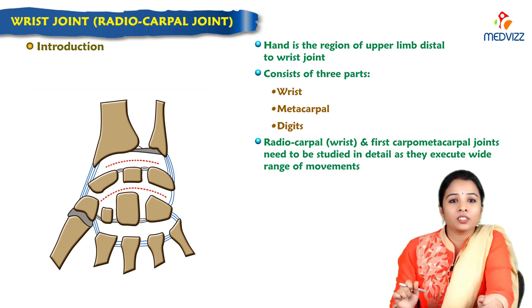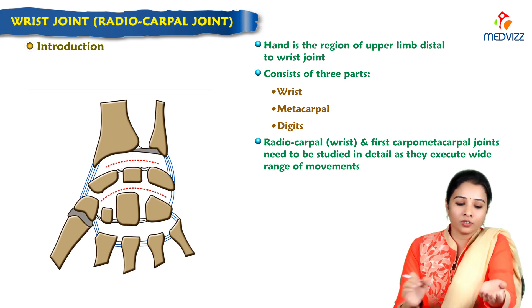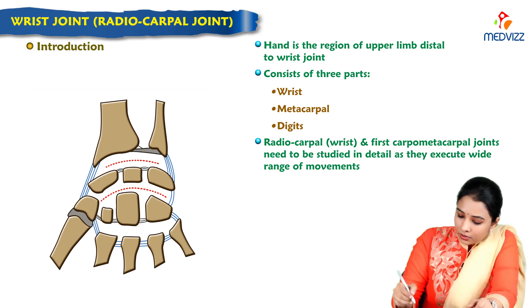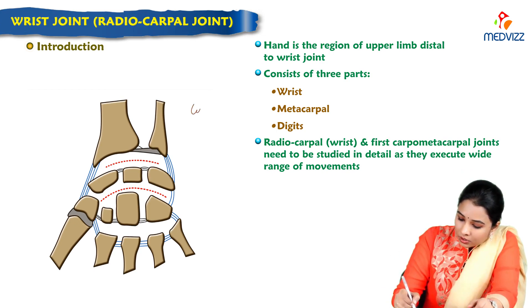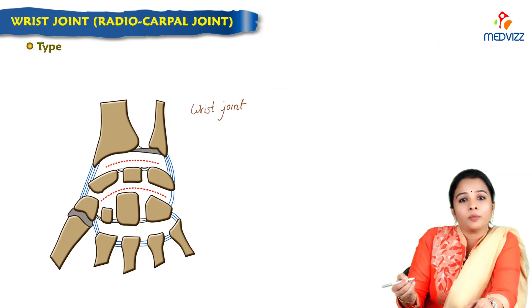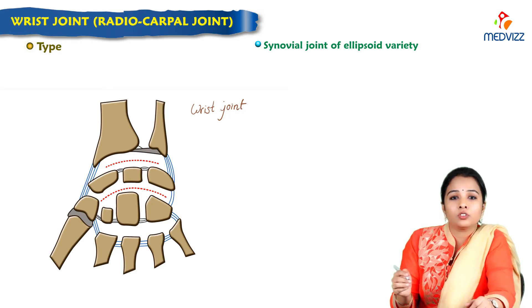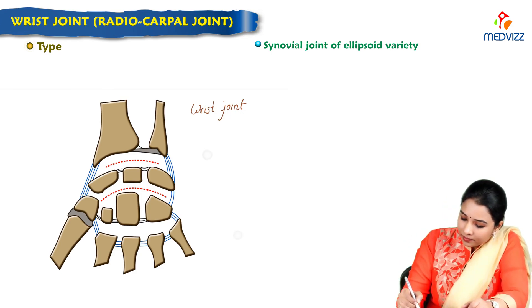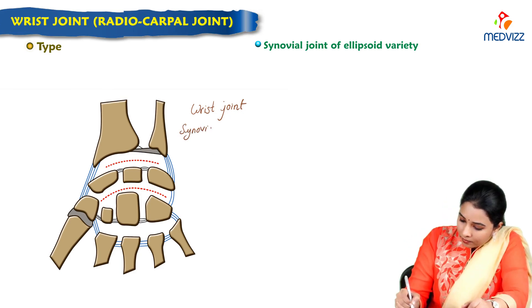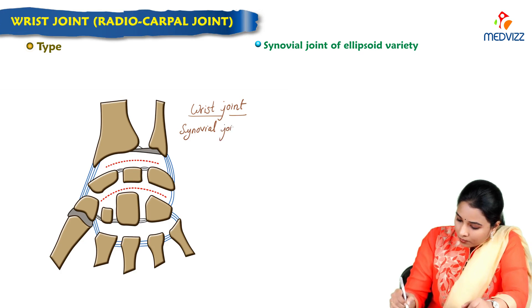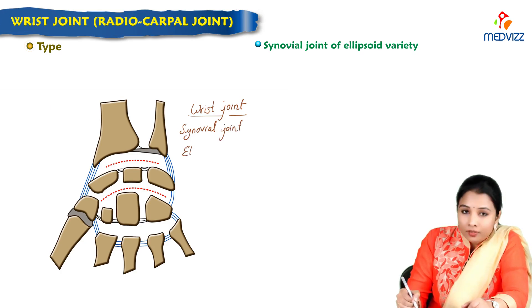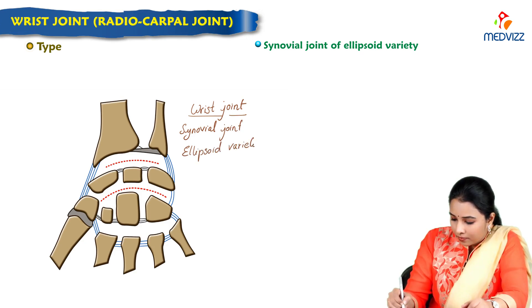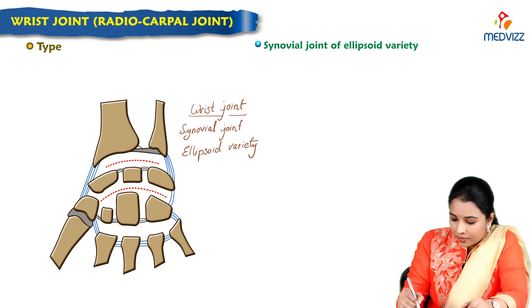Beginning with the wrist, it is a synovial joint because it is movable. It is a synovial joint of ellipsoid variety.